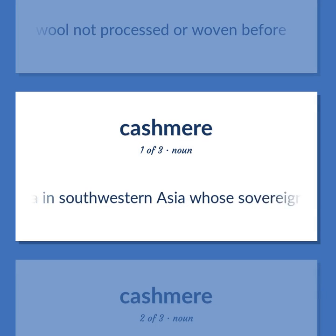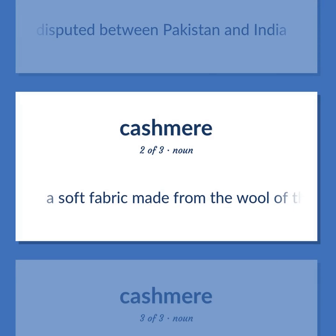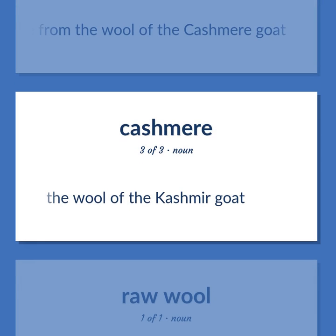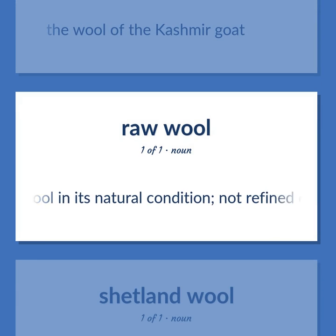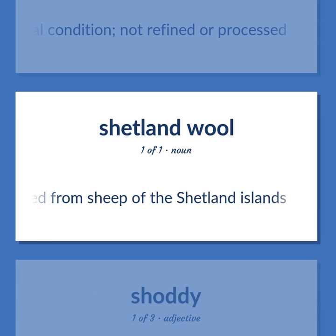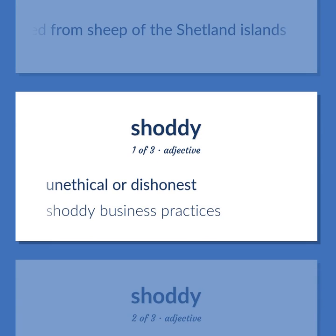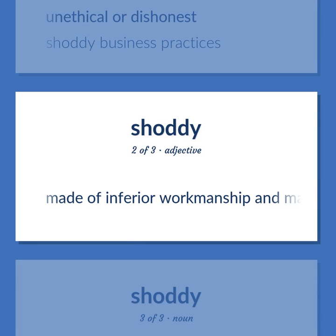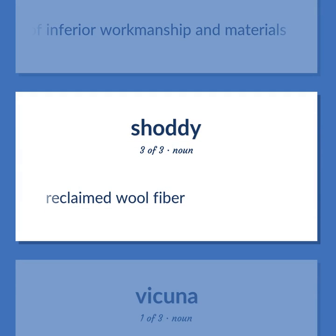Kashmir: An area in southwestern Asia whose sovereignty is disputed between Pakistan and India. Cashmere: a soft fabric made from the wool of the Kashmir goat; the wool of the Kashmir goat. Raw wool: wool in its natural condition, not refined or processed. Shetland: a wool obtained from sheep of the Shetland Islands. Shoddy: unethical or dishonest — shoddy business practices; made of inferior workmanship and materials. Also: reclaimed wool fiber.